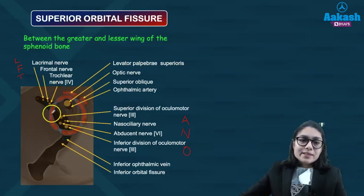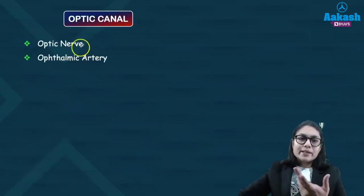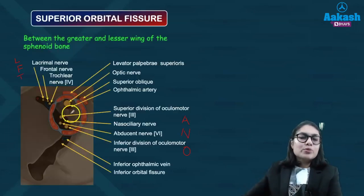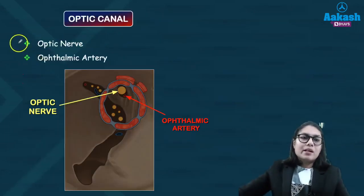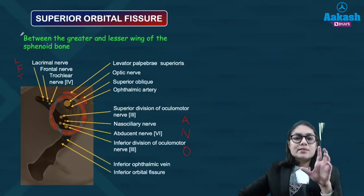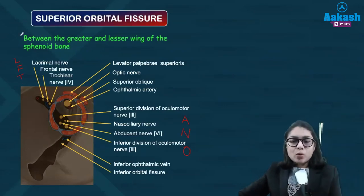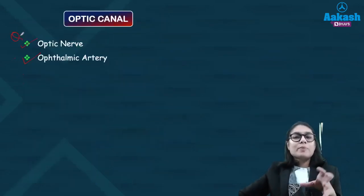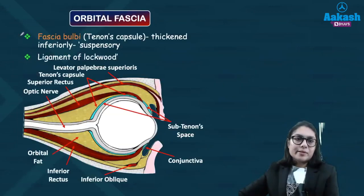Within this tendinous ring there is also presence of your optic foramen or optic canal, which is basically going to contain your optic nerve and your ophthalmic artery. So you have to know all the structures passing through the superior orbital fissure and also the structures passing through the optic canal — which are your optic nerve and your ophthalmic artery.